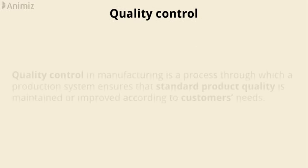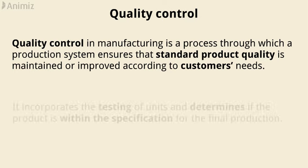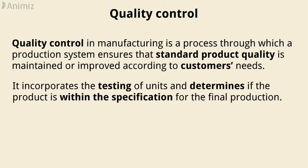What is quality control? Quality control in manufacturing is a process through which a production system ensures that standard product quality is maintained or improved according to customers' needs. In other words, it incorporates the testing of units and determines if the product is within the specification for the final production.